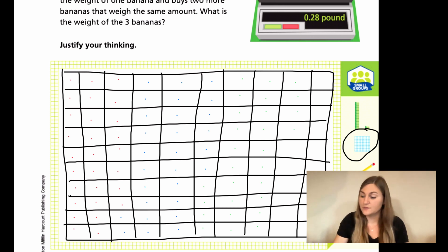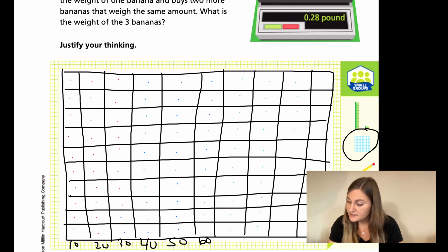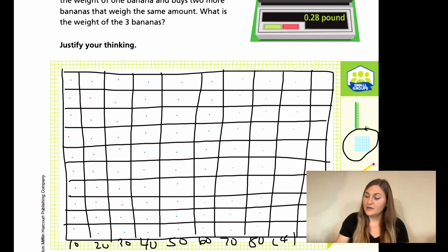Alright, that was 28 three times as you can see from the three different colors. So how much is that total? Well, if we know this was 10, 20, 30, 40, 50, 60, 70, 80, and then we just have four in that column, that would be 0.84 because remember this is a grid of hundreds. So 28 three times would be 0.84.